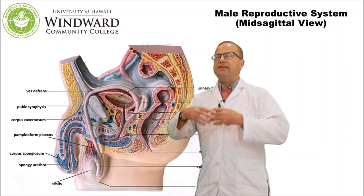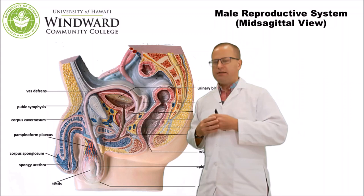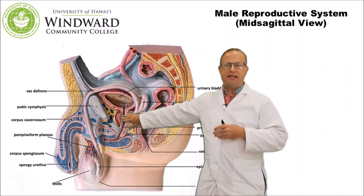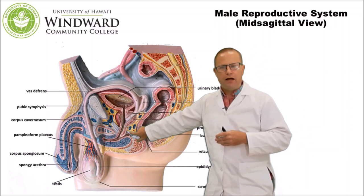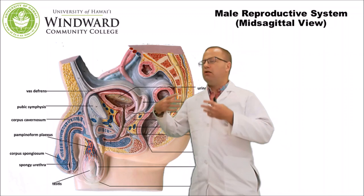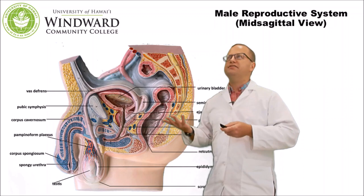Number three: the male reproductive system has to produce seminal fluid. A lot of the ejaculate is not actually spermatozoa but other things. Seminal fluid is produced by three different glands. One is the prostate gland, which makes an alkaline, nutrient-rich solution. We also have the seminal vesicles and another tiny gland called the bulbourethral gland or Cowper's glands. All of these glands help produce different parts of the seminal fluid.